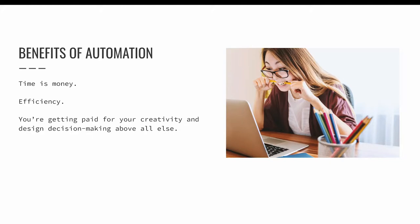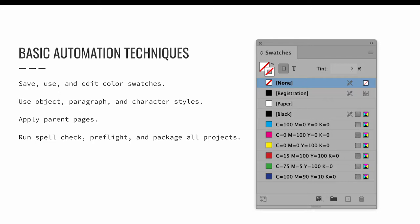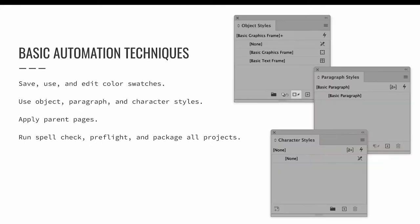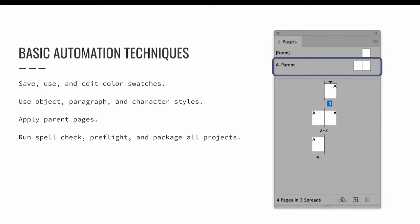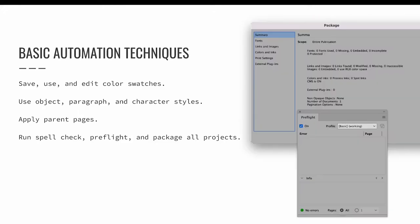Anything that makes the digital design process easier — either for current design needs or for future editing — can be considered a form of design automation. For the purposes of this class, we'll put different forms of design automation into two categories: the basics and beyond the basics. Basic design automation includes things you should already be doing as part of your natural everyday InDesign workflow, like saving color swatches, using object, paragraph, and character styles, creating parent pages, checking spelling, and properly preflighting and packaging your work. We'll review these processes now for reference.